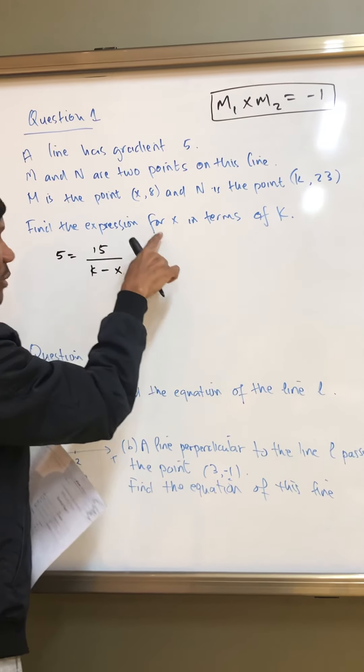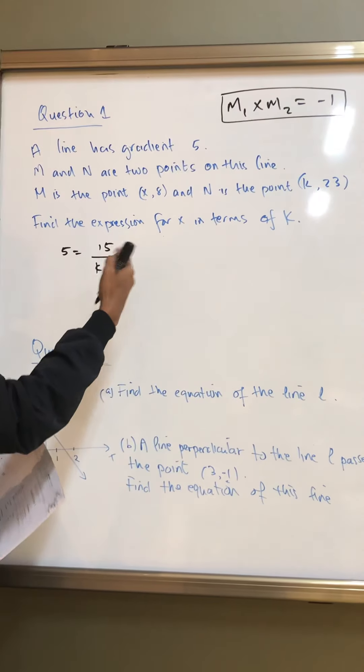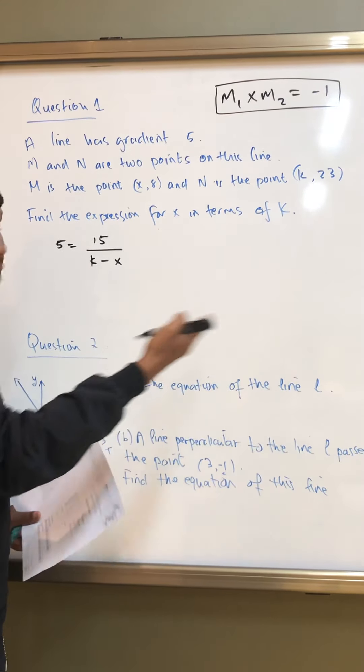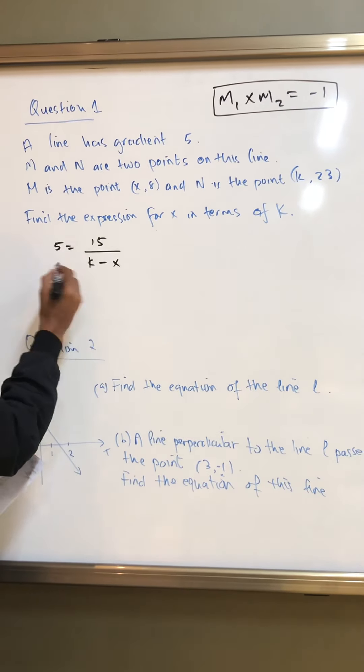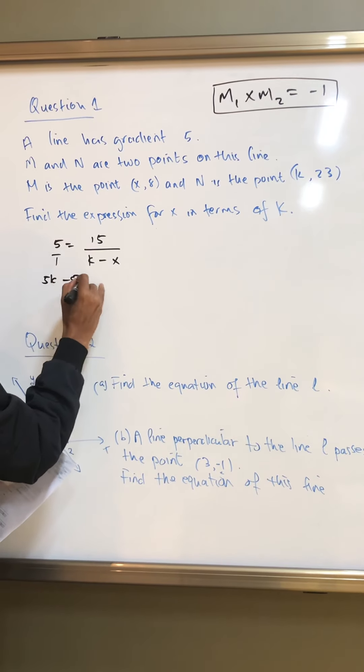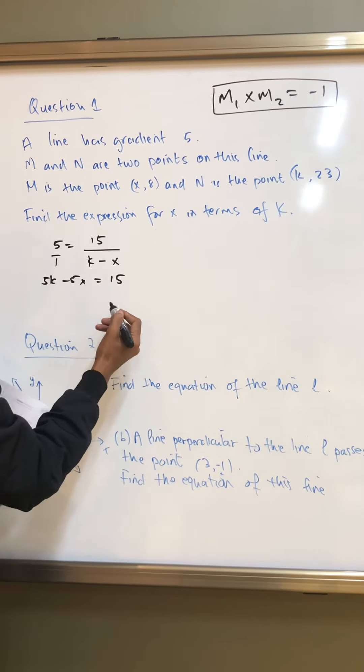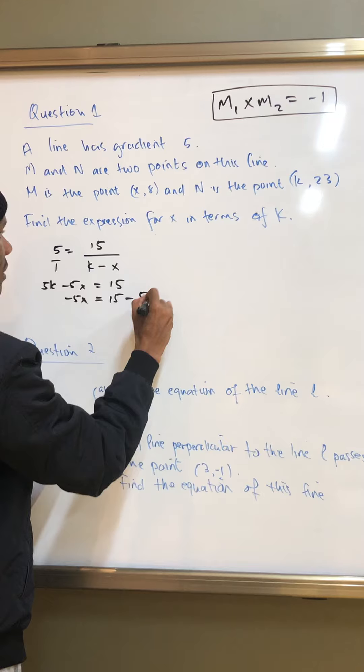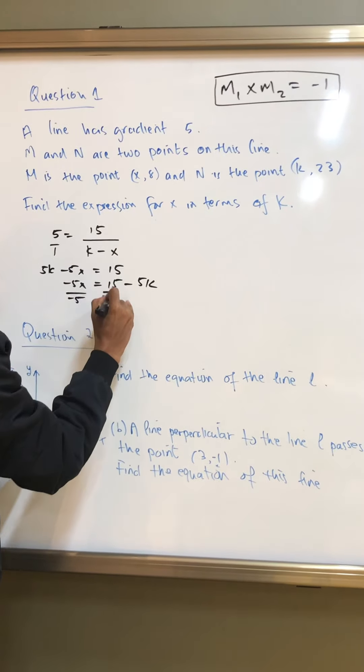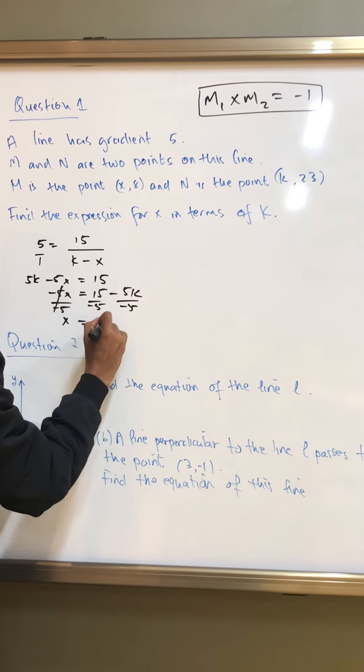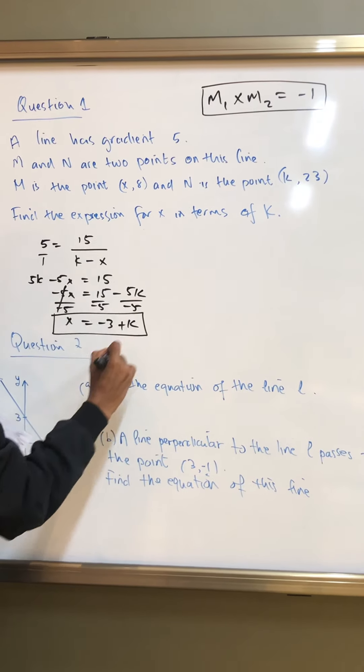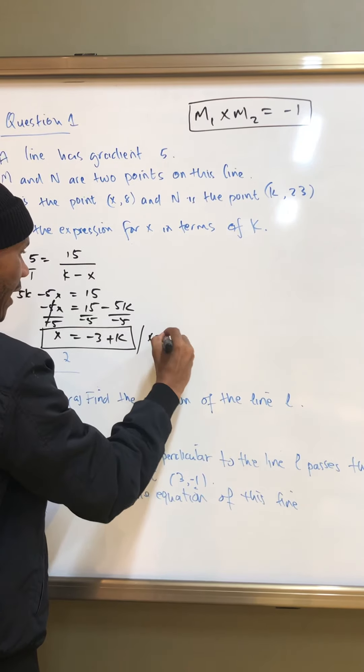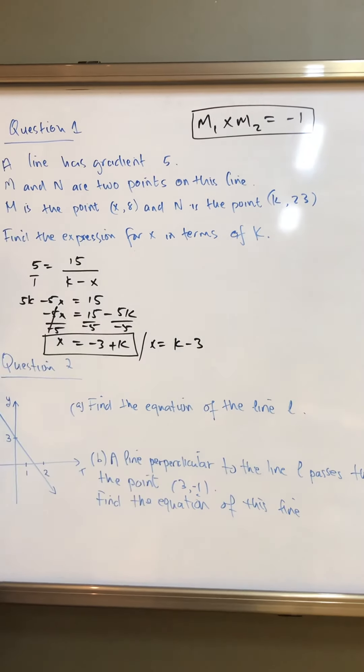So the question says find the expression of x in terms of k. It's the same as saying express x in terms of k. So find x. That means make x the subject of the formula in terms of k in this sense because k would still remain a variable. All right? So in that case we cross multiply 5k minus 5x equals 15 and you can remain with 15 minus 5k over negative 5. So this is your answer. So now you've expressed x in terms of k or you can write it as x is equal to k minus 3. All right, let's go to question 2.